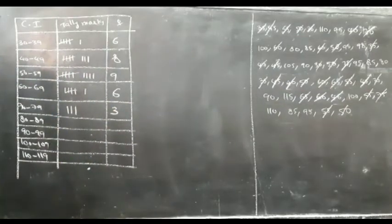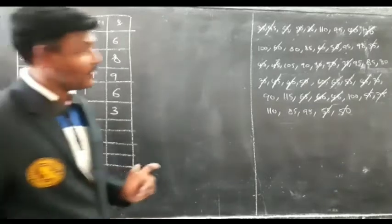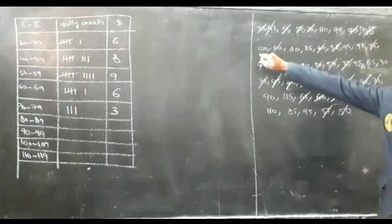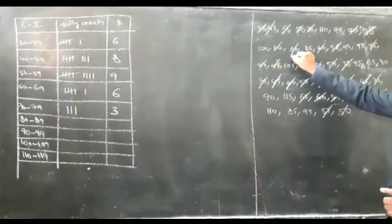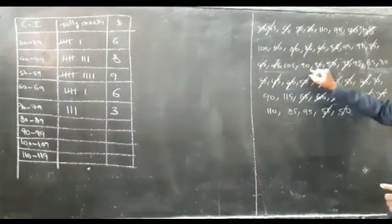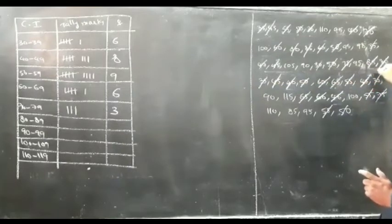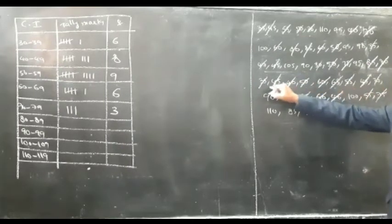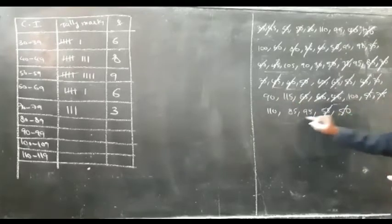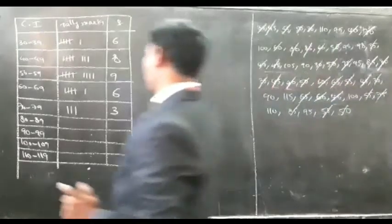For the class 80 to 89, counting the values gives us 5. So there are 5 oranges in that class interval.